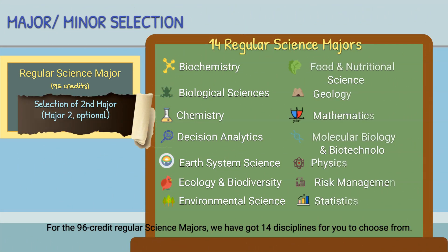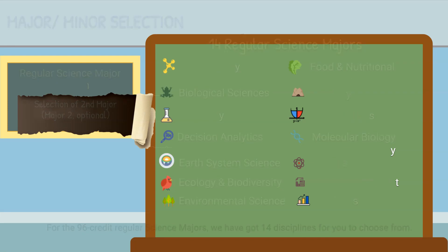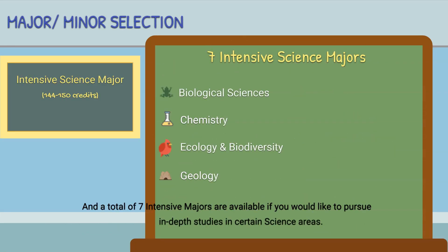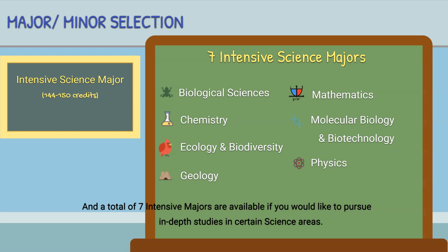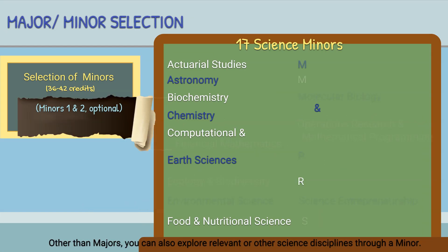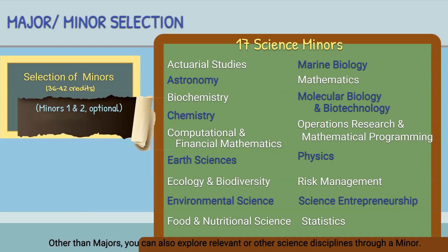For the 96-credit regular science majors, we have 14 disciplines for you to choose from. A total of seven intensive majors are also available if you would like to pursue in-depth studies in certain science areas. Other than majors, you can also explore relevant or other science disciplines through a minor.